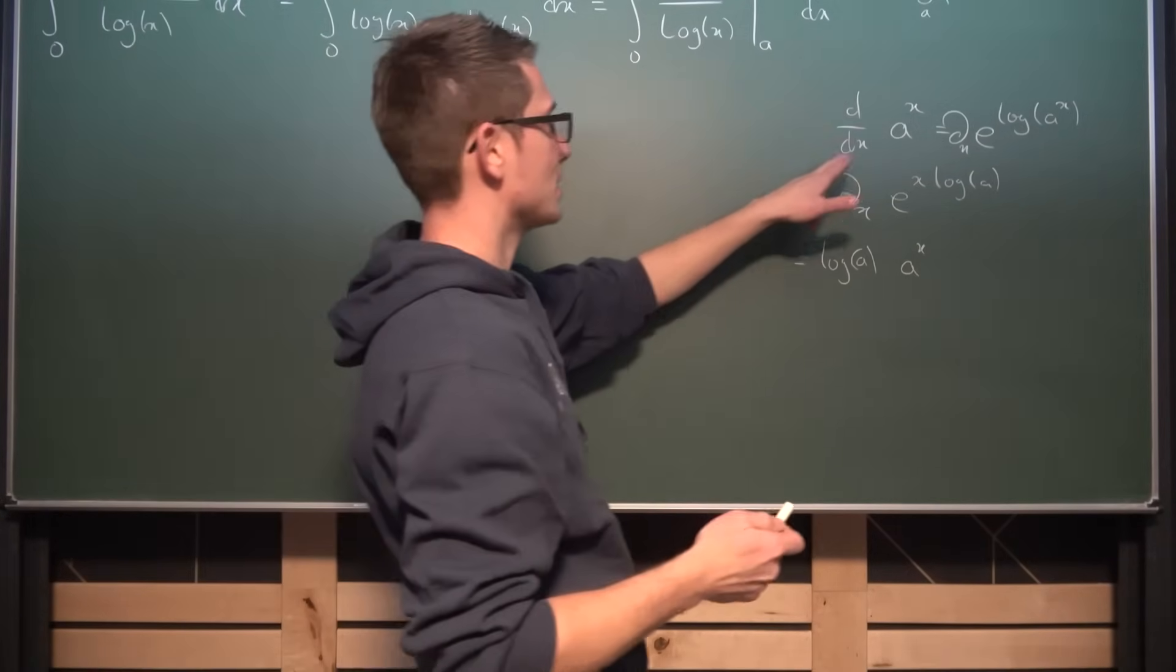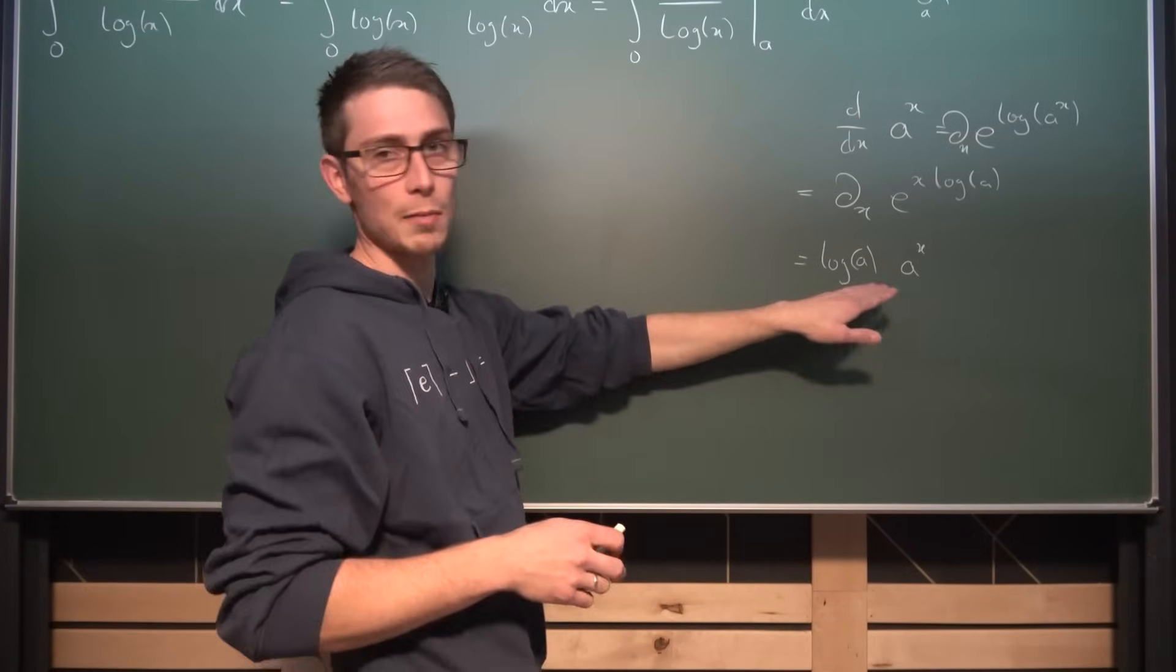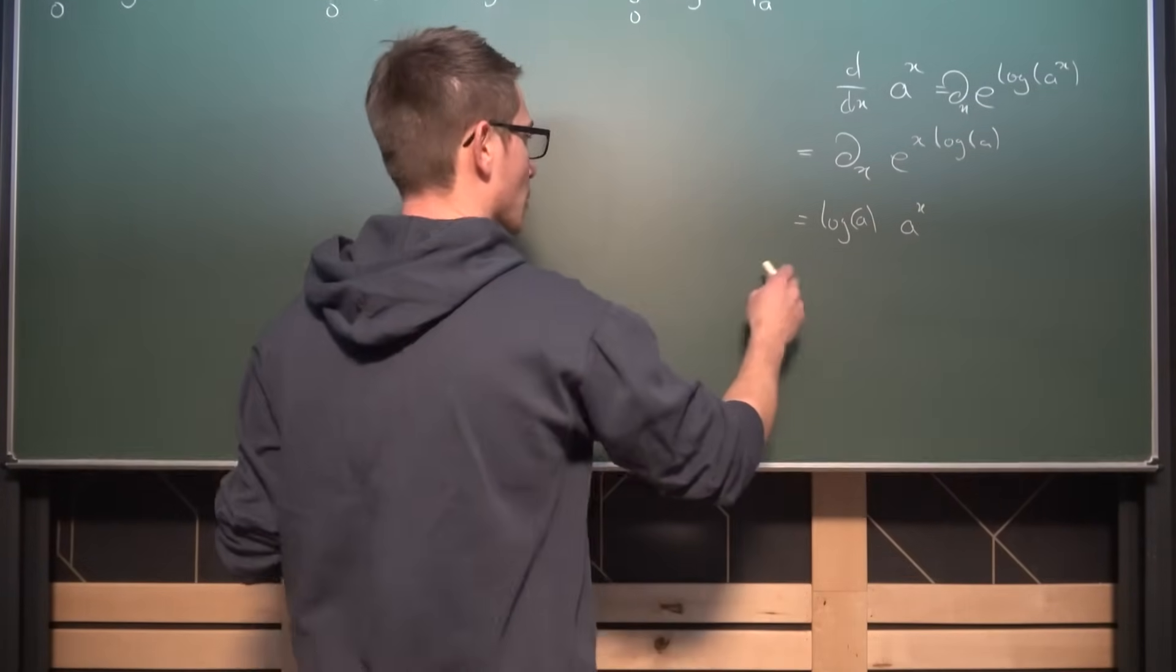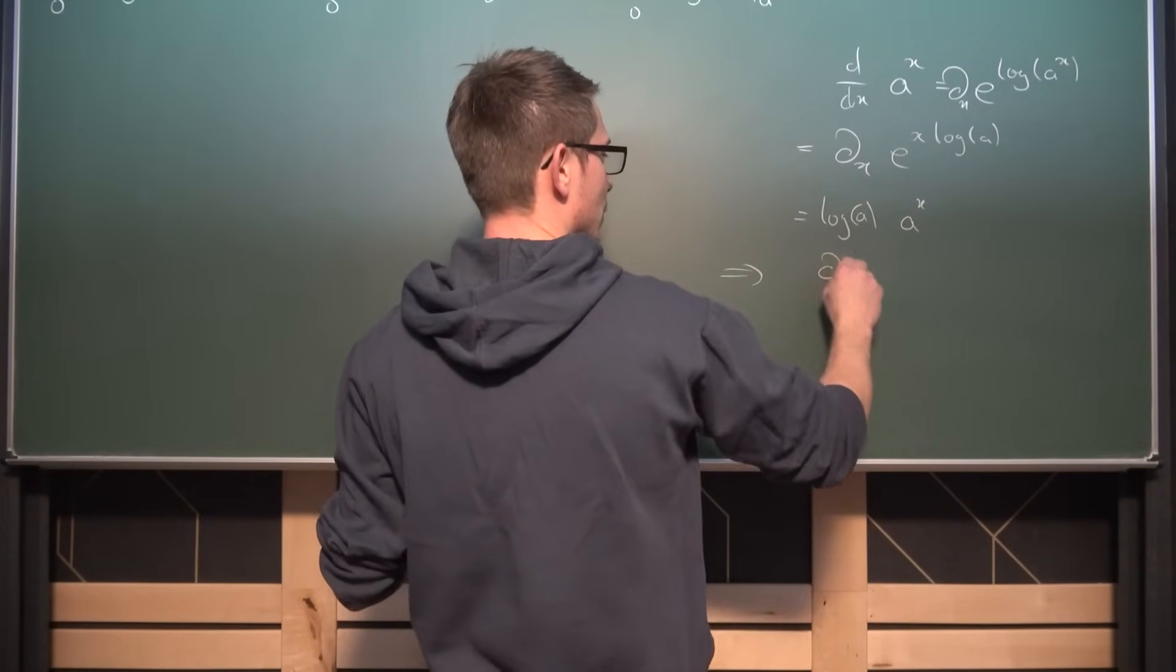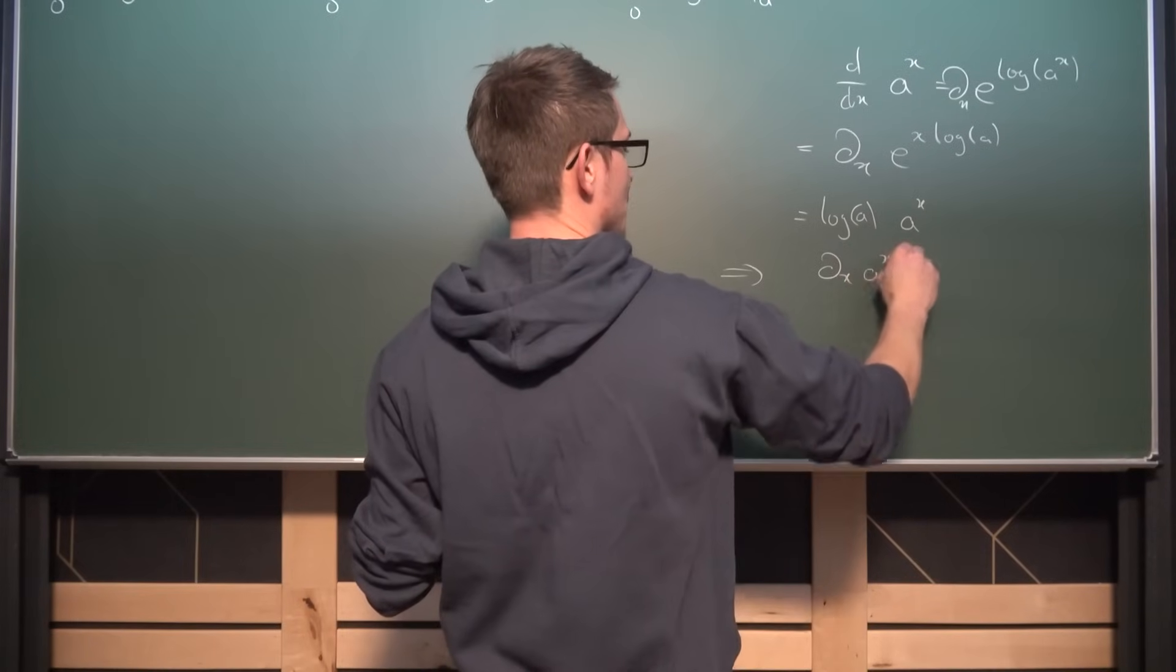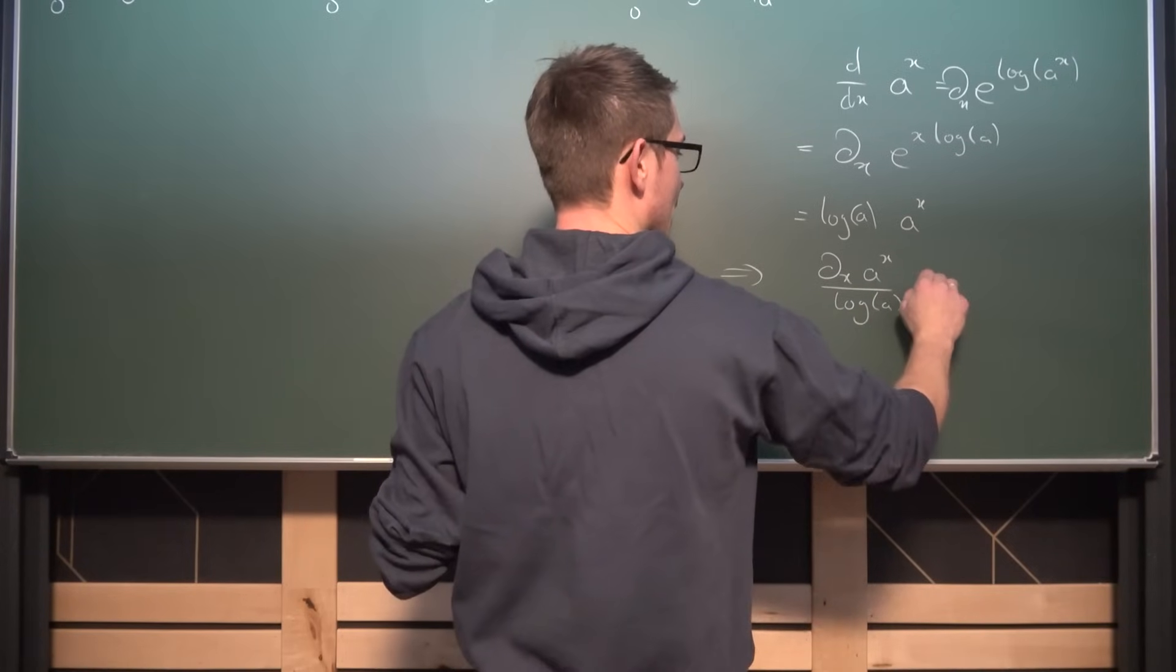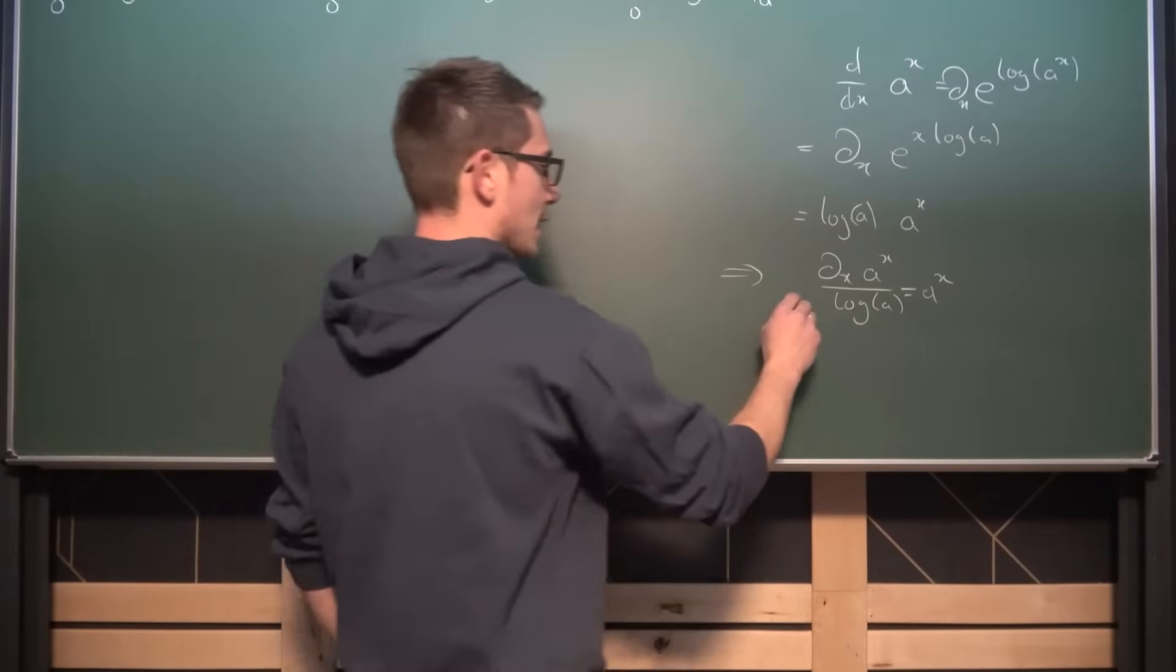Okay very nice. So what we get is that the differential of a to the x is just a to the x being preserved times log of a. Now what I'm going to do is I'm just going to divide both sides by log of a, giving us overall that the differential of a to the x divided by log of a is going to give us a to the x once again. And now what happens if we integrate both sides